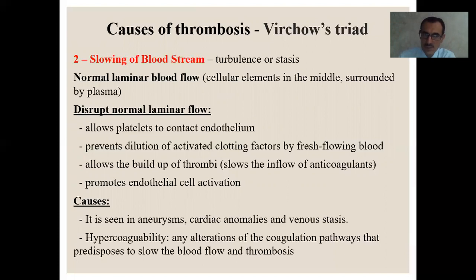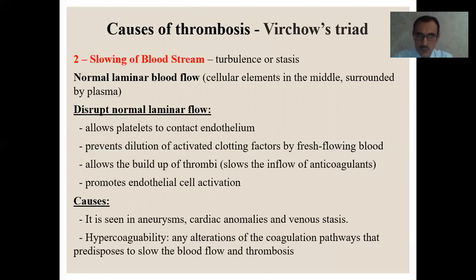Disruption of normal laminar flow allows blood cells to contact the endothelium, prevents dilution of activated clotting factors by fresh flowing blood, allows the buildup of thrombin, slows inflow of anticoagulants, and promotes endothelial cell activation. Causes seen include aneurysms, cardiac anomalies, and venostasis. The third postulate of Virchow's triad is hypercoagulability — alterations of the coagulation pathway — including increased fibrinogen level leading to increased viscosity.